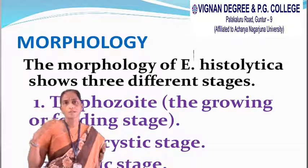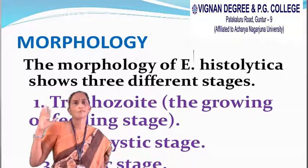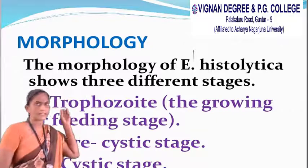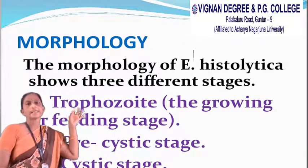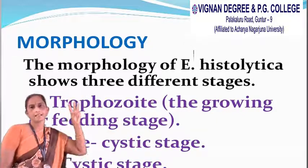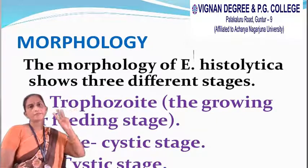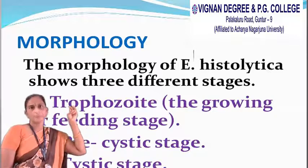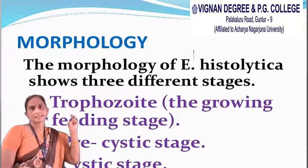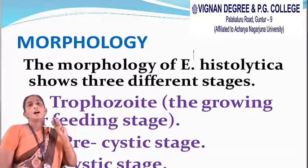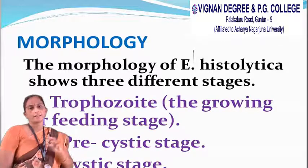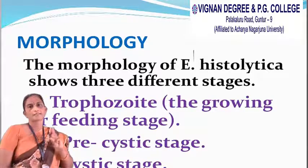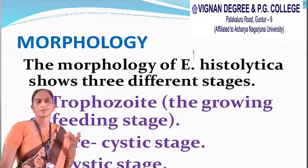Coming to the morphology of Entamoeba histolytica, it consists of three stages: one is trophozoite, another is pre-cystic stage, and cystic stage. The trophozoite is the active feeding stage.